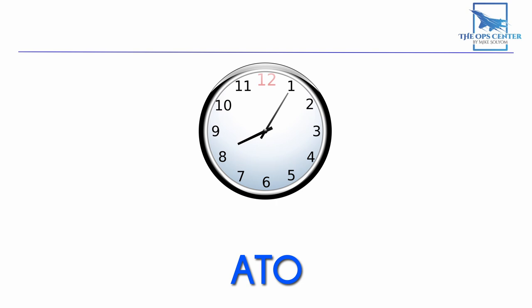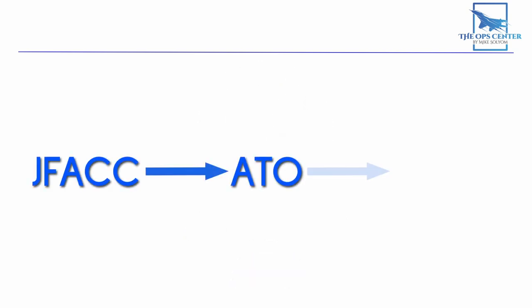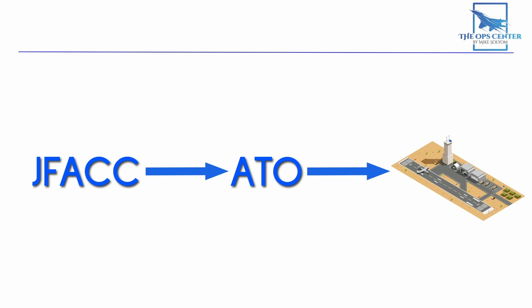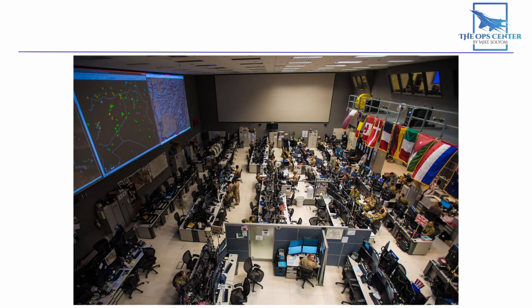And since that's usually one day, ATOs are organized into 24-hour cycles. Once the day's ATO is completed, it gets sent out by the JFAC staff to the air crews that will be executing it. The JFAC can usually be found at the Joint Air Operations Center. Here's the Air Operations Center for CENTCOM at Al-Udeid Air Base in Qatar. You can see that the JFAC staff is pretty big. You'll also find liaisons from other services and even from other combatant commands like cyber and special operations here.